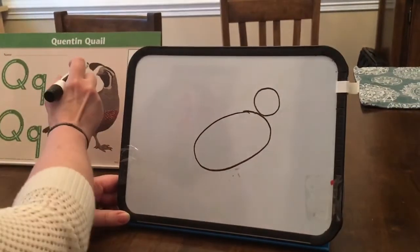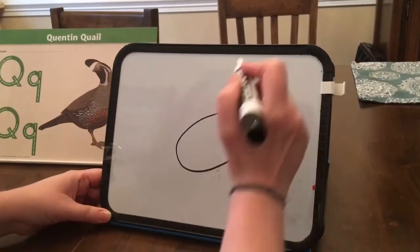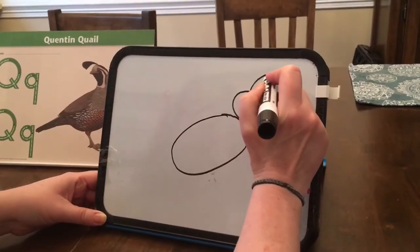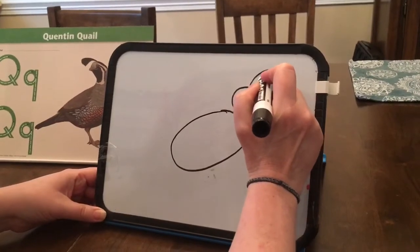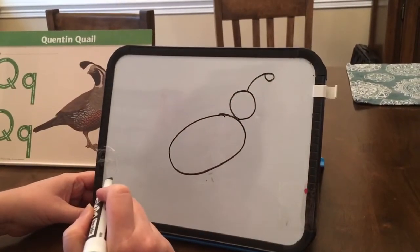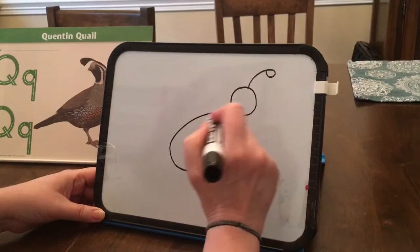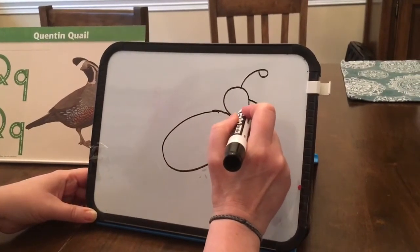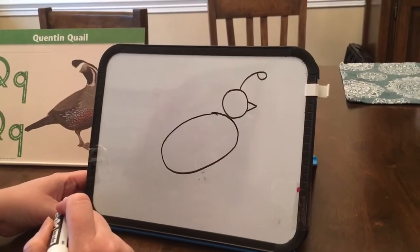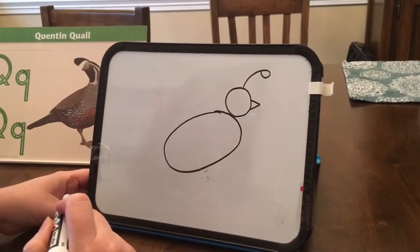Now if you'll notice, Quentin Quayle has a big feather on his head so we're going to draw that. You can draw that like this with a little shape there and his beak we're going to make, what shape is this that has three sides? Do you know what that's called? That's right, it's a triangle.